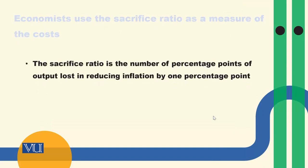The sacrifice ratio is the number of percentage points of output lost in reducing inflation by one percentage point. Inflation ko ek percentage point kam kerne ke nati joh output mein kami baakye ho ga, this is the sacrifice ratio.